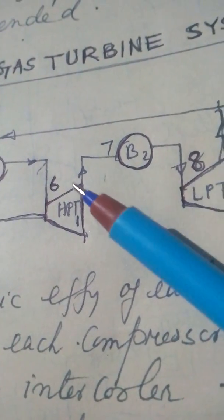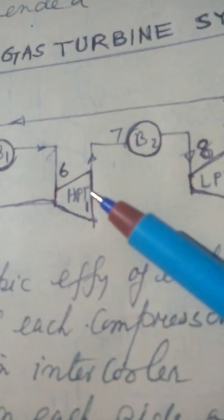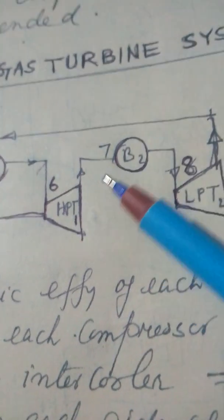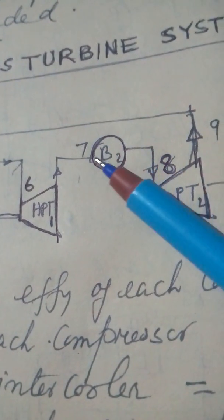Then, from 6 to 7 is high pressure turbine. 7 to 8, again, here is a gas boiler.